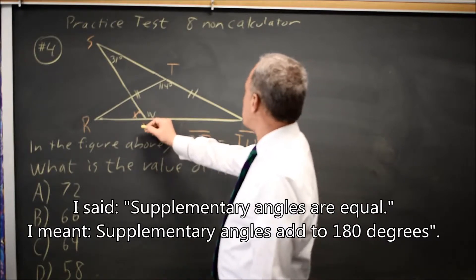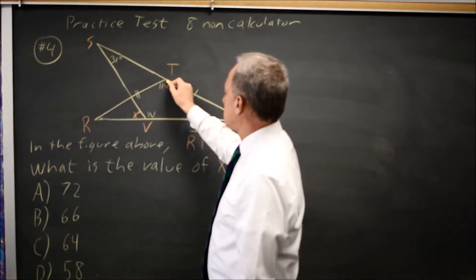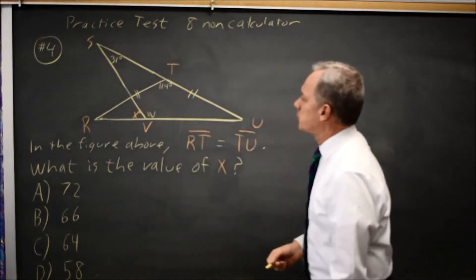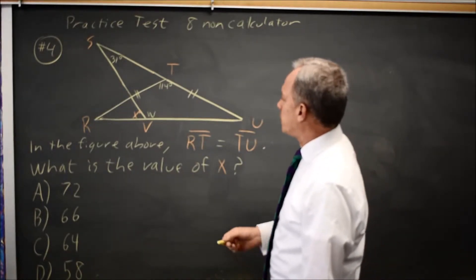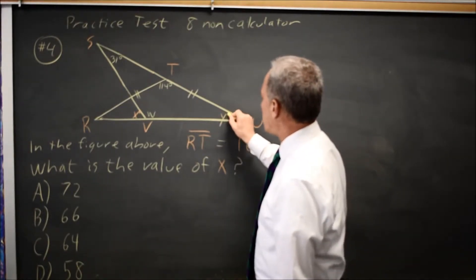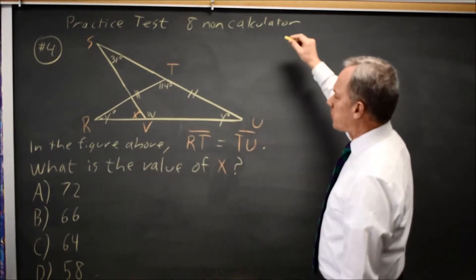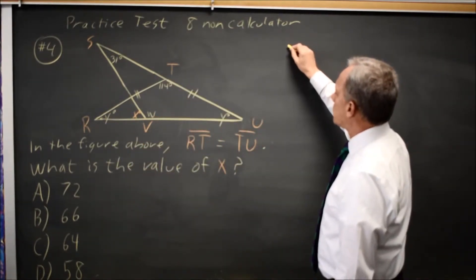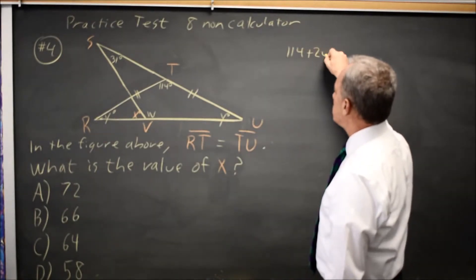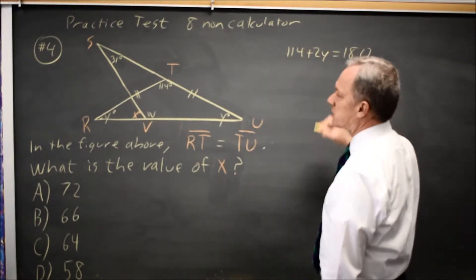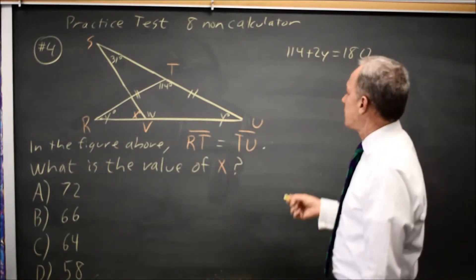So in particular, triangle RTU from here to here to here, the angles add up to 180 degrees. So let's call this angle Y. This is also Y. Y plus Y plus 114. So that's 114 plus 2Y equals 180 because the three angles of this triangle add up to 180 degrees.